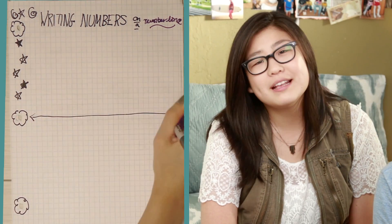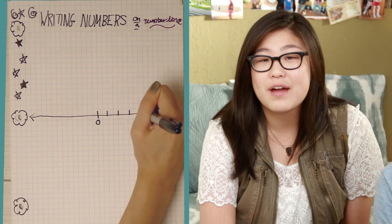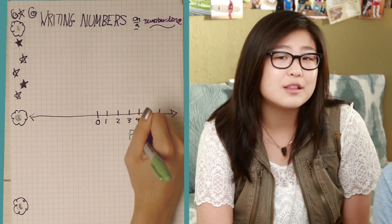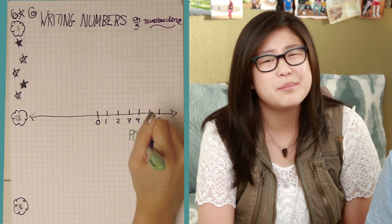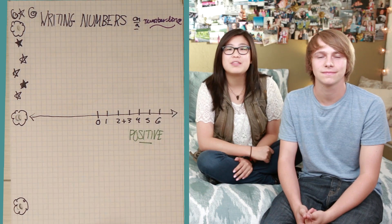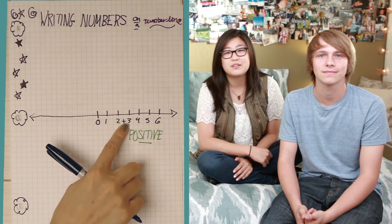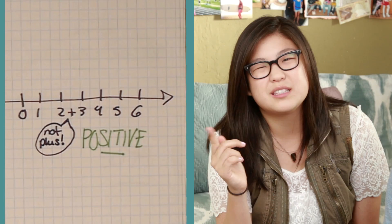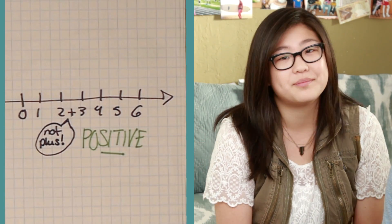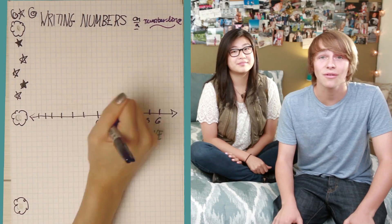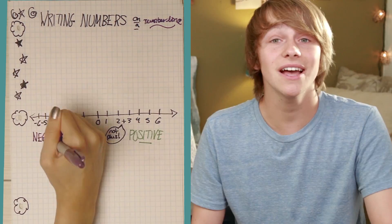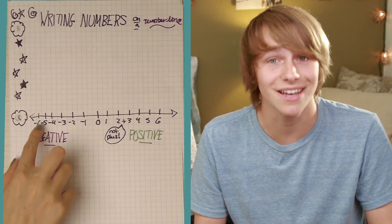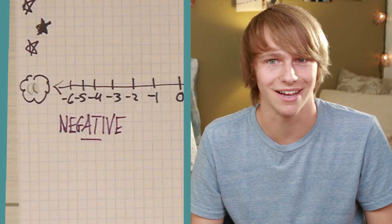Now that we have talked about integers, let's see how we write them down on a number line. Positive numbers go to the right of zero. You can write them with or without the positive sign — they mean the same thing. 3 is the same thing as positive 3. Just don't call it plus 3, because math teachers don't like it — it's an operation. Negative numbers go to the left of zero. And yes, that is a negative sign, not a minus sign.